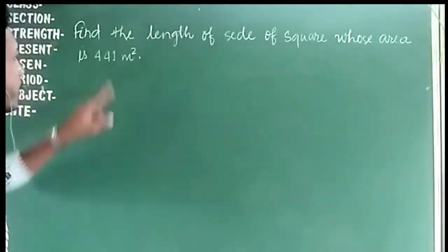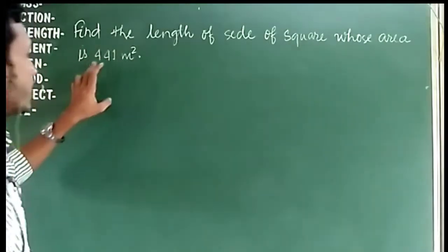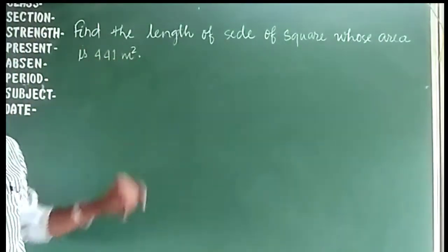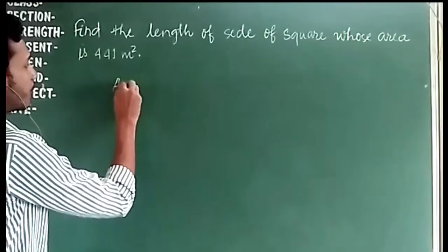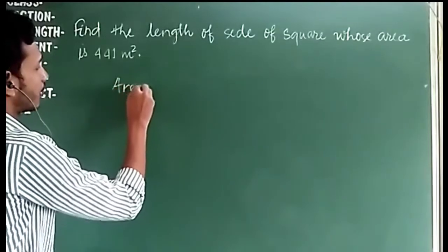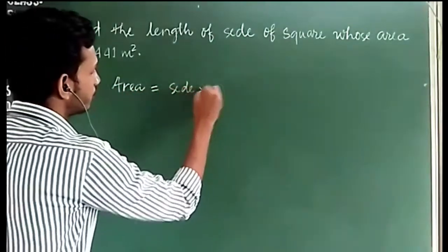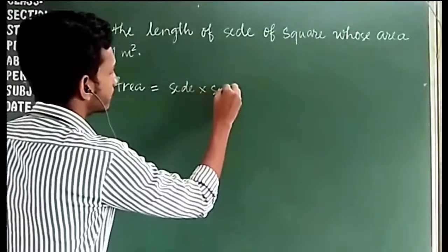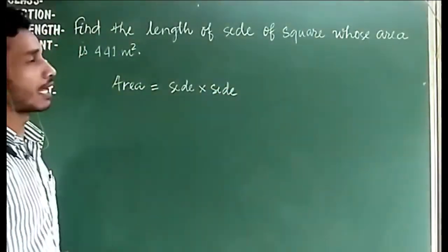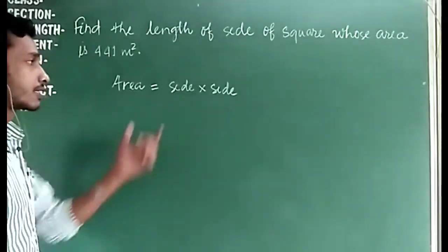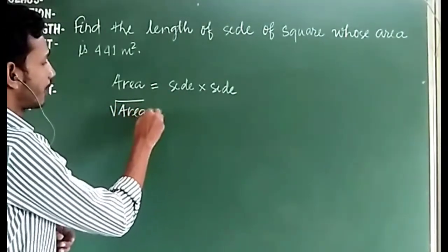We have the question: find the length of the side of a square whose area is 441 square meters. We know that the area of a square is side × side, and we need to find the side. So to find the side, we need to find the square root of the area.